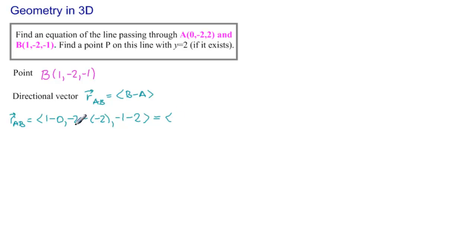And so we have 1 minus 0 is 1. Minus 2 minus minus 2 is minus 2 plus 2, which is 0. And then minus 1 minus 2 is minus 3. So here's our directional vector, and here's a point.